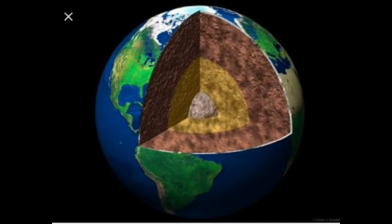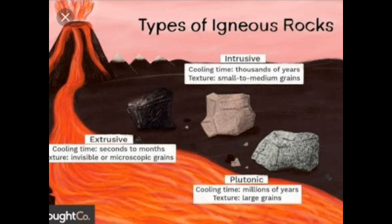Based on how they were formed, rocks are classified into igneous, sedimentary, and metamorphic rocks. The three types of rocks are: igneous rocks, sedimentary rocks, and metamorphic rocks.